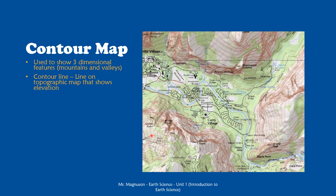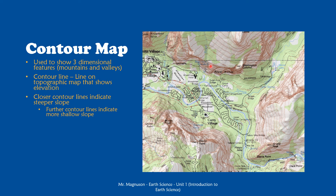Everything along this line is at the same height. If you were walking perfectly along that line in real life, you would be walking flat even though you would be walking on the side of a hill. Contour lines can also indicate steepness — how close they are tells us how steep the slope is. The area in the middle where there aren't many contour lines is really flat. Where the contour lines are so close together that they're hard to see, this is really steep — basically a cliff. And then up here it's not quite as steep, but definitely steeper than in the middle.